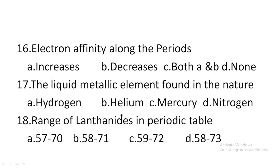Next: electron affinity along the periods — option A: increases, option B: decreases, option C: both A and B, option D: none. Electron affinity refers to the gaining capability. Along the period, the gaining capability increases, so electron affinity along the period increases. This is the correct answer.